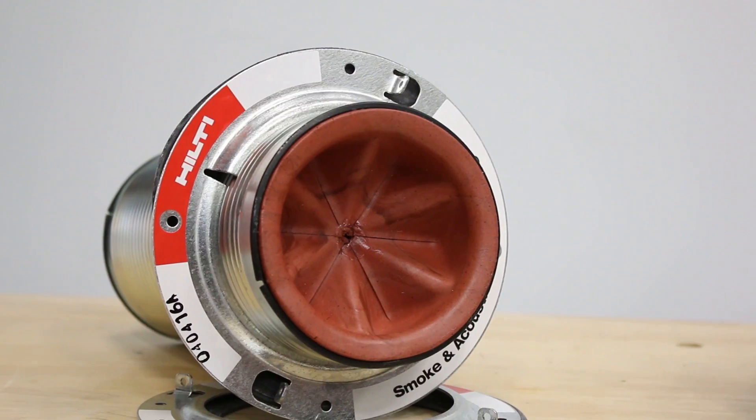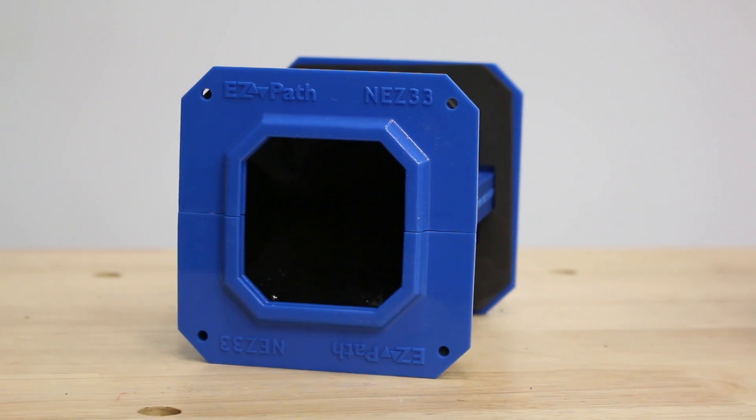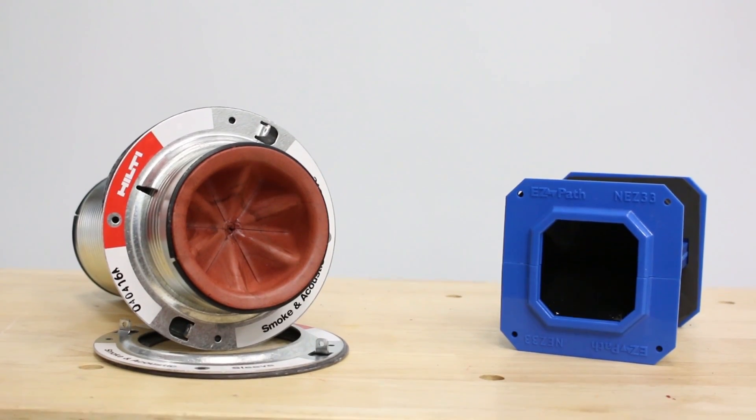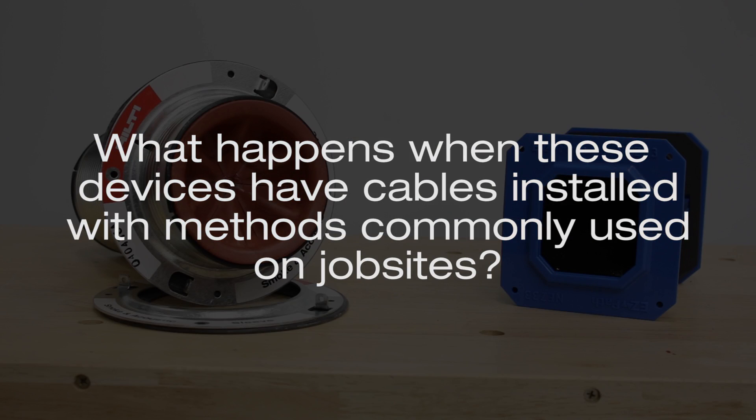In addition to fire rated cable pathways, the industry's leading manufacturers both have a non-fire rated device aimed at providing sound and air movement ratings. But what happens when these devices have cables installed with methods commonly used on job sites?